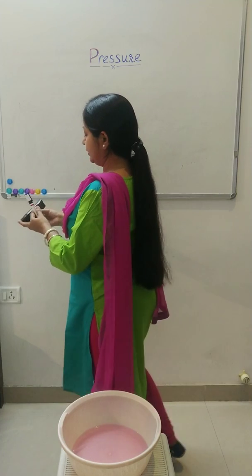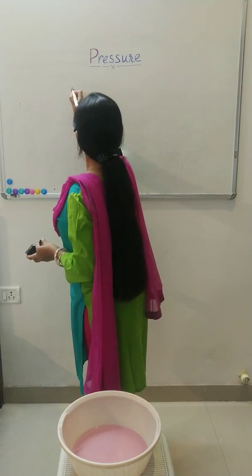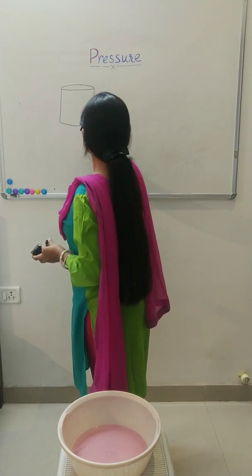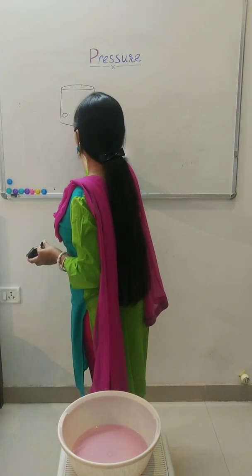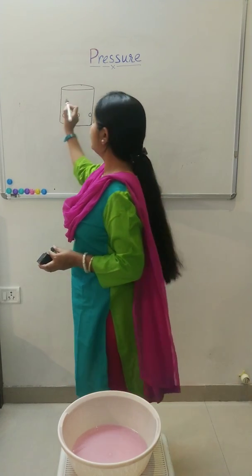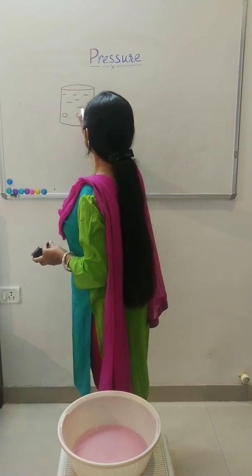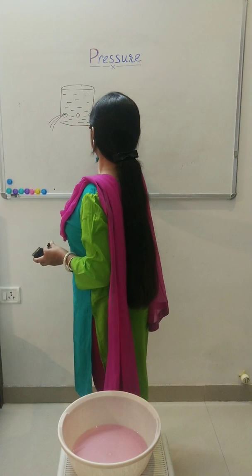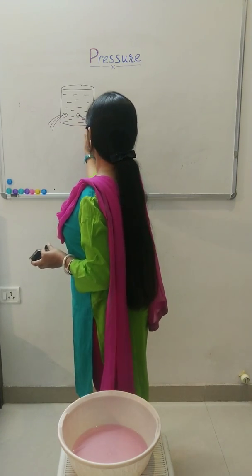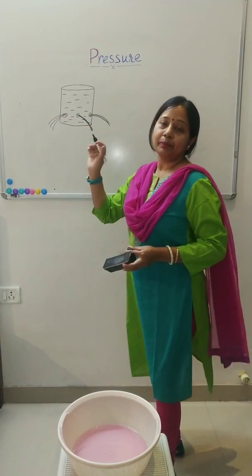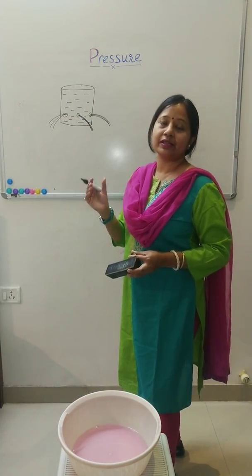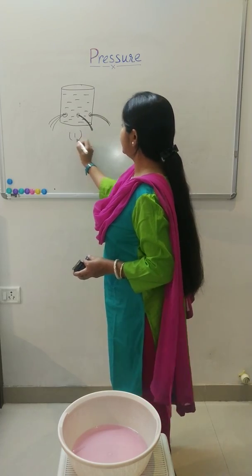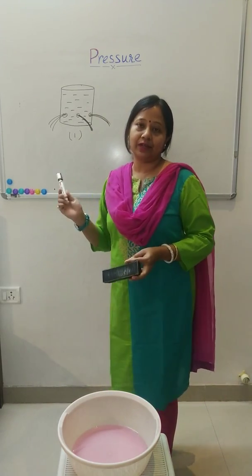We can understand this with the help of a figure. We draw one beaker and show that it has three or four different holes in different directions. When you fill water, water will come out from all three holes and cover a somewhat equal distance, which means pressure exerted by liquids remains the same in all directions at the same level. This is our first figure and the first activity related to liquids.